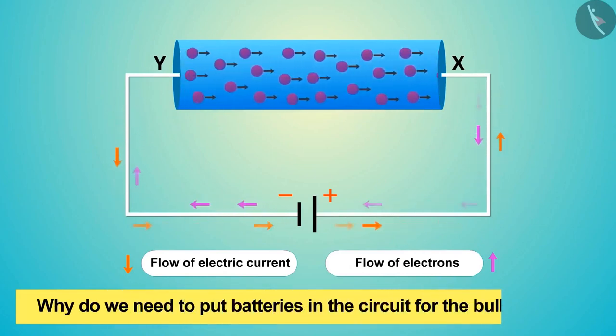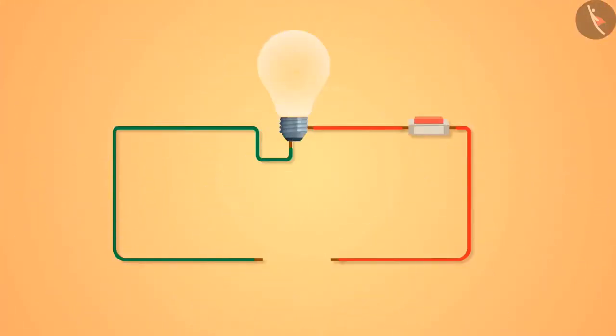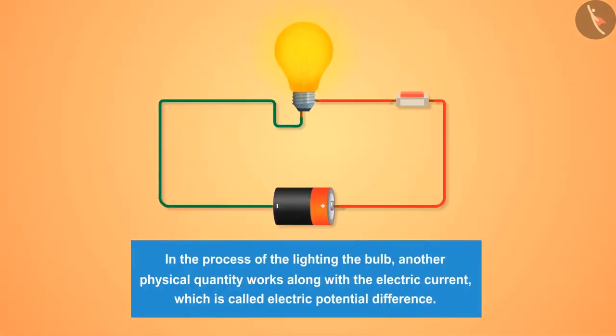Why is it necessary to put the battery in the process of lighting the bulb? Another physical quantity works along with the electric current, which is called electric potential difference.